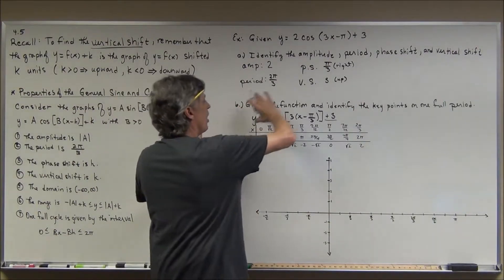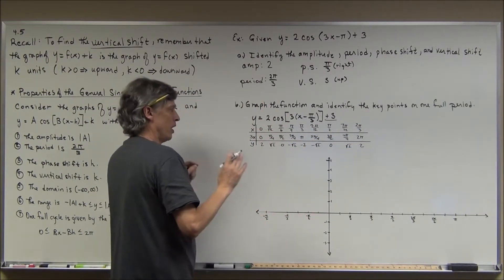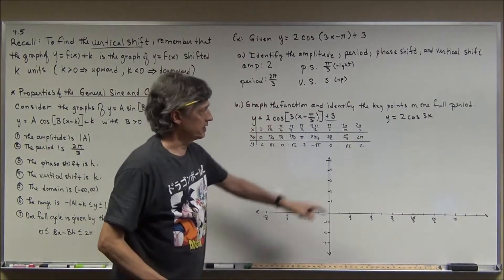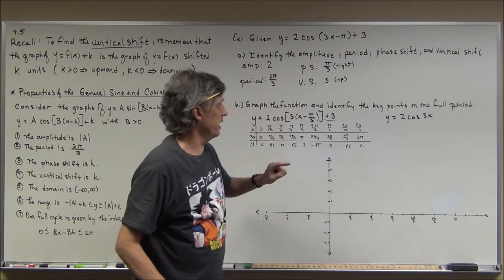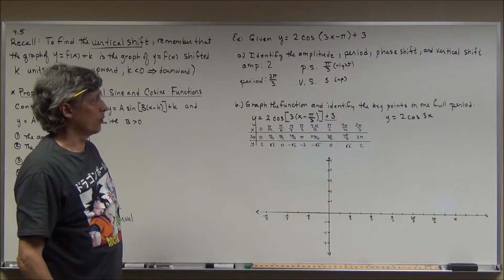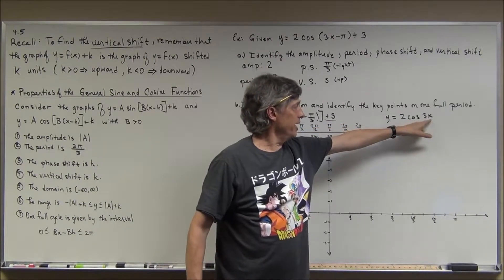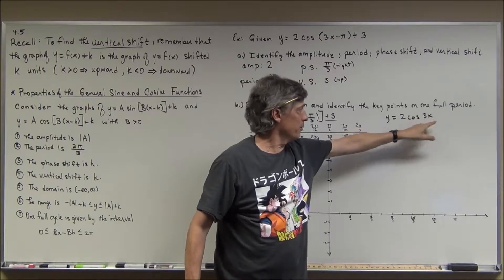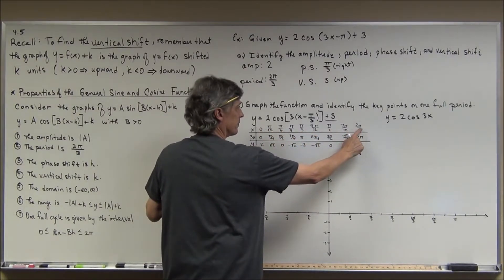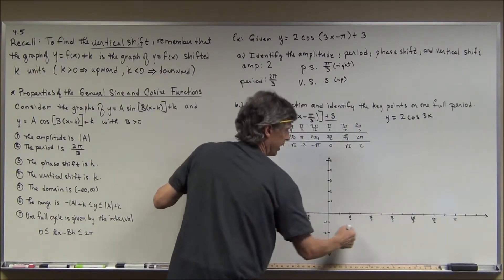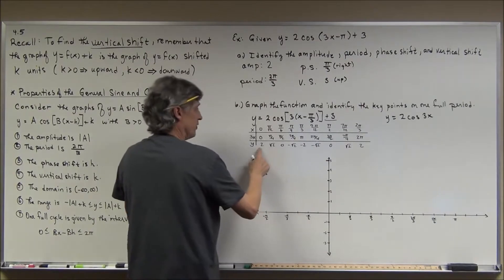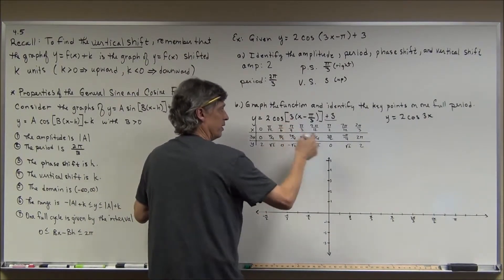To graph this, I'm not going to apply all transformations at once. First, I'll graph y = 2cos(3x) — that has the amplitude and the period, but not the phase shift or vertical shift. Since I'm multiplying x by 3, I take my standard angles and divide them by 3, so that when I multiply by 3 I get angles whose cosine I know. I plug those x-values in, multiply by 3, take the cosine, then double it — that's where these y-values come from.